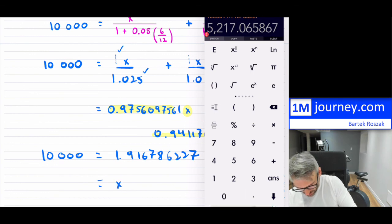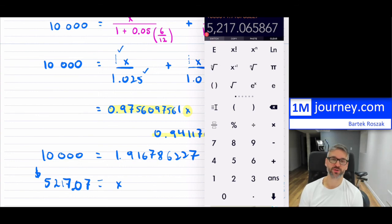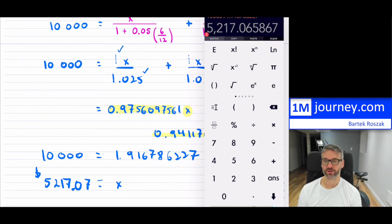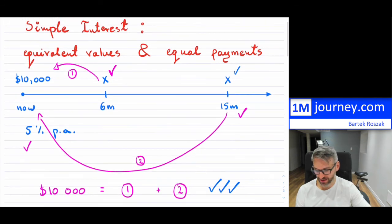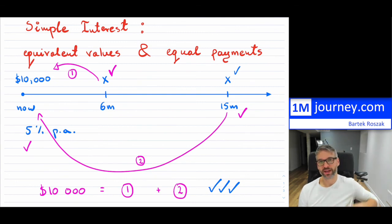So X comes out to approximately that amount. Because the payments are in the future at 5%, they should definitely be more than $5,000 each, since we're moving from the future backwards. And that's how you approach equivalent values with equal payments for a debt — or even investments or things of that nature. I hope you found this useful, cheers everybody.